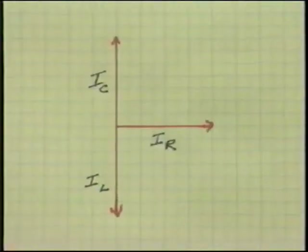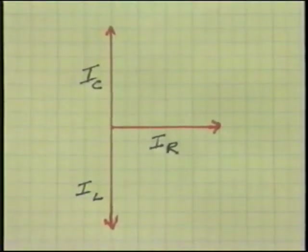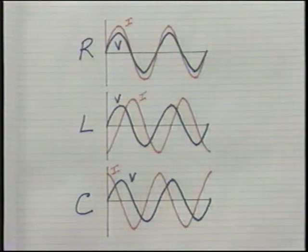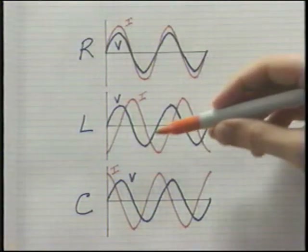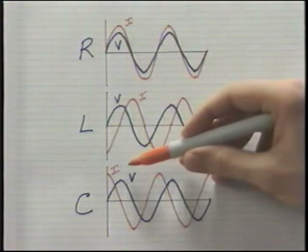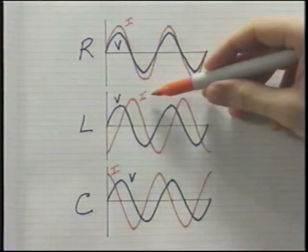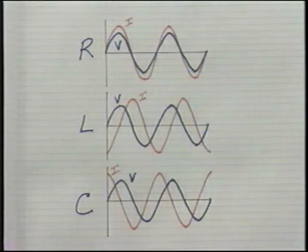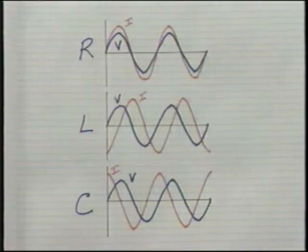Here is a phasor diagram representing these current relationships in a parallel RLC circuit. As was true of the reactive voltages in a series RLC circuit, the capacitive current is 180 degrees out of phase with the inductive current. Because of this, you can simply subtract the inductive current from the capacitive current to find the total reactive current.